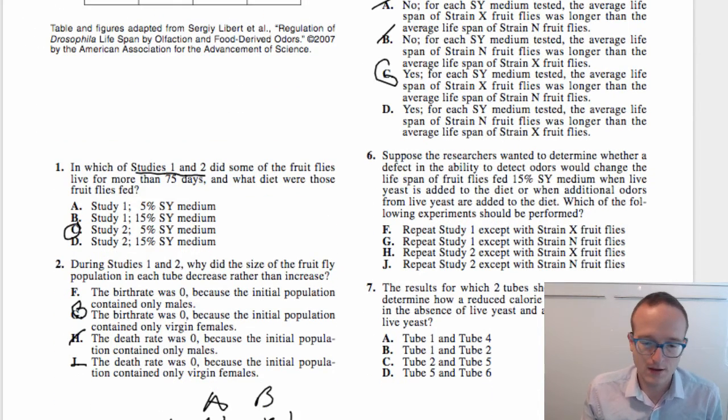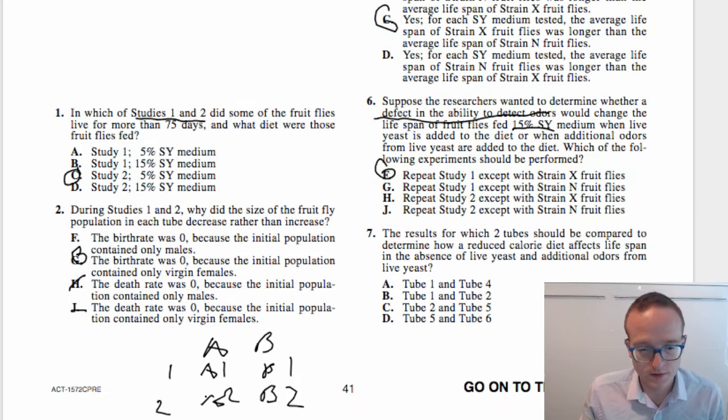Suppose the researchers wanted to determine whether a defect in the ability to detect odors, so this is their little keyword for strain X flies versus N flies, would change the lifespan of fruit flies fed 15% SY medium when live yeast is added to the diet or when additional odors from live yeast are added to the diet. Which of the following experiments should be performed? Okay, this is a lot of stuff, but really you need to focus on 15% SY medium and defect in the ability to detect odors. So defect in the ability to detect odors points to strain X. 15% medium points to study one.